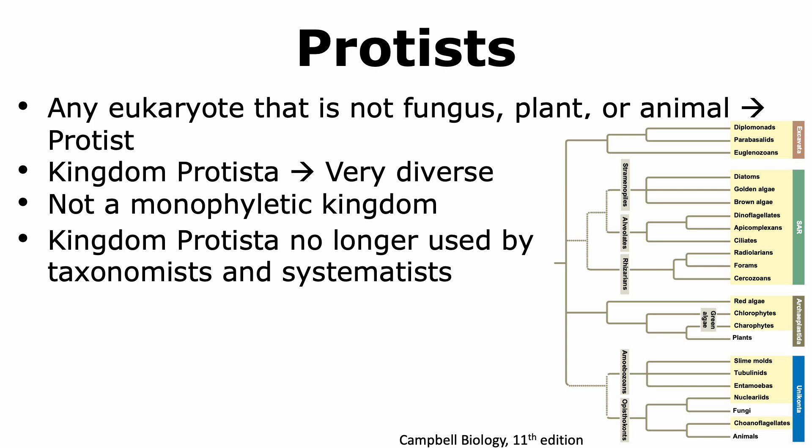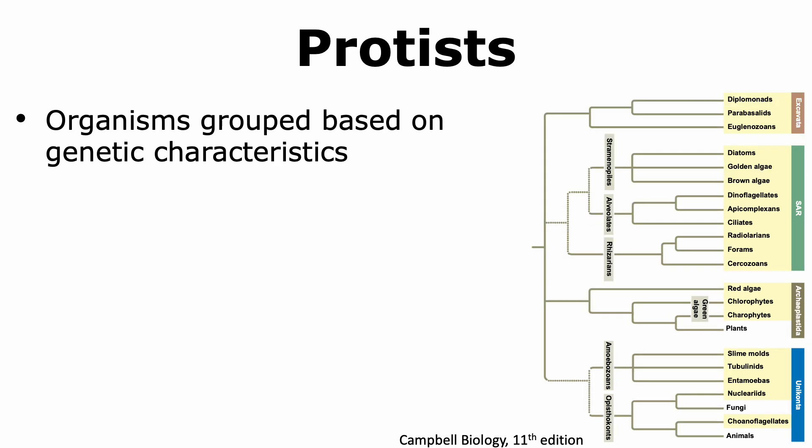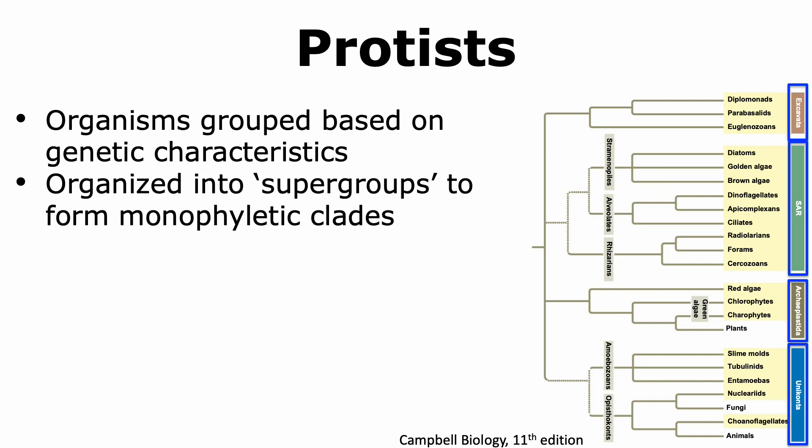Thus, the kingdom of Protista no longer exists and is not used by taxonomists and systematists. Organisms that are considered to be protists are now being grouped based on their genetic characteristics. By analyzing their nucleic acid and genetic information, these organisms are now being grouped into supergroups with the hope that monophyletic clades can be formed.